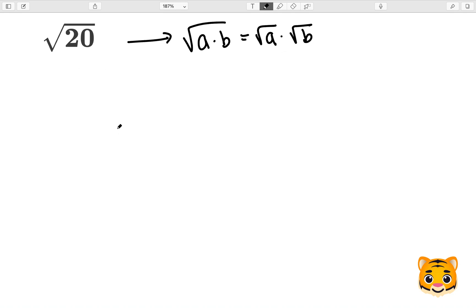In order to apply this to the square root of 20, we will use the factors of 20, which I'll use 4 and 5 because 4 is a perfect square. This will help us simplify in the future.